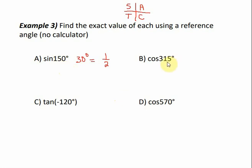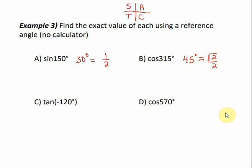For the cosine of 315 degrees, that's in the fourth quadrant, closest to 360. We subtract 315 from 360, giving a reference angle of 45 degrees. Using the hand trick with the middle finger down, cosine is the square root of the number of fingers to the right over 2, so it's square root of 2 over 2. Cosine is positive in the fourth quadrant, so the cosine of 315 degrees is square root of 2 over 2.